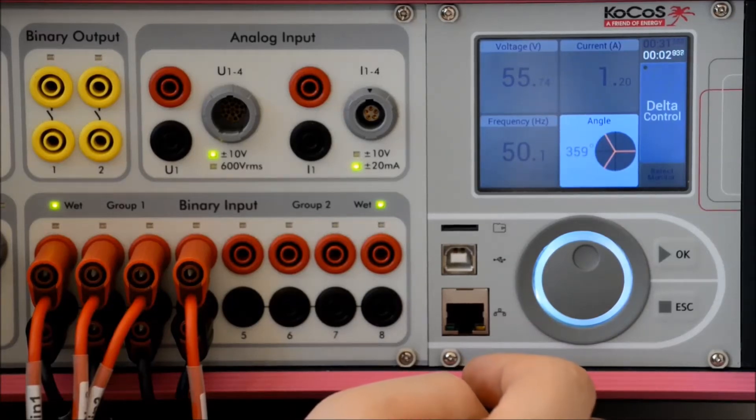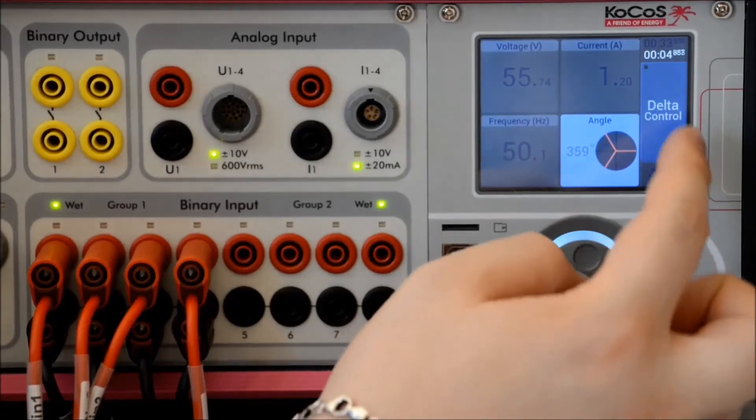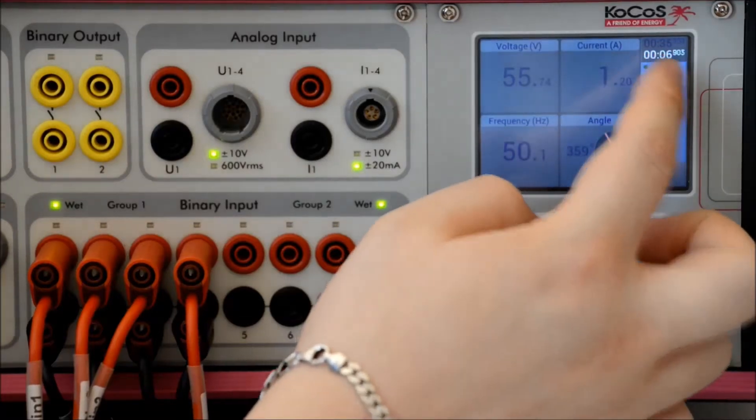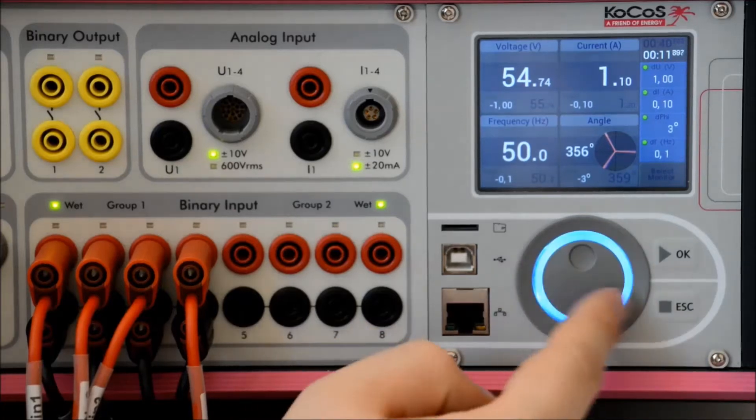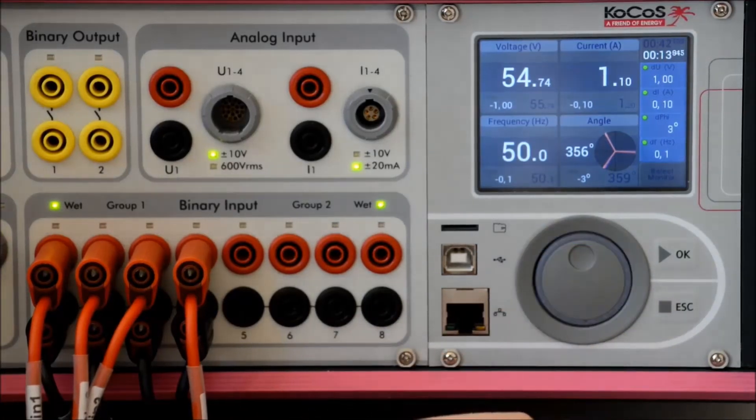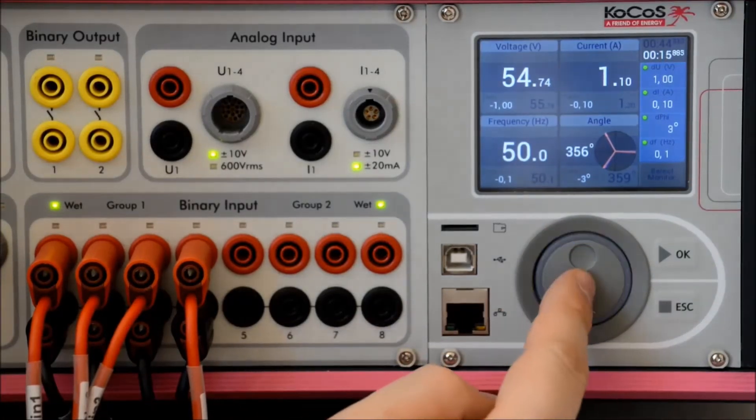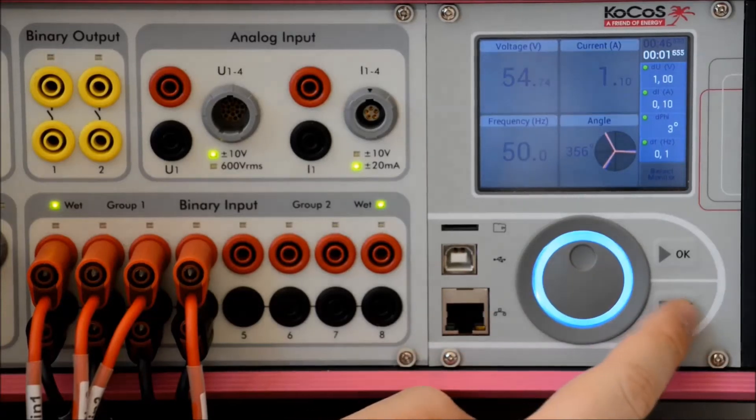Also, it is possible to use our delta control, which features the option to change all values at the same time in one single turn. Again, the system waits for input, so the LED ring is flashing. To stop the output, you simply press escape.